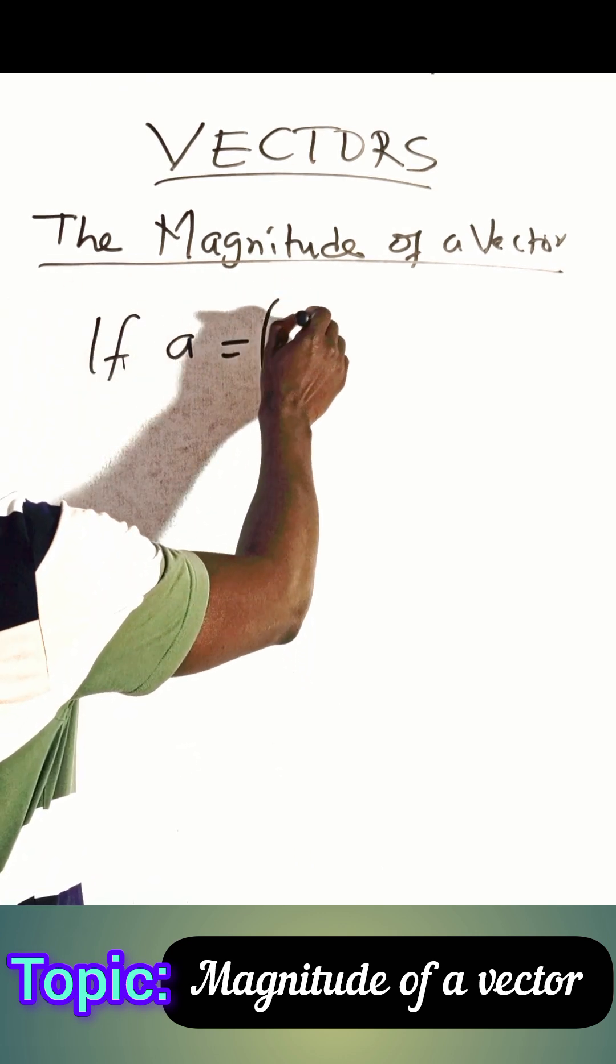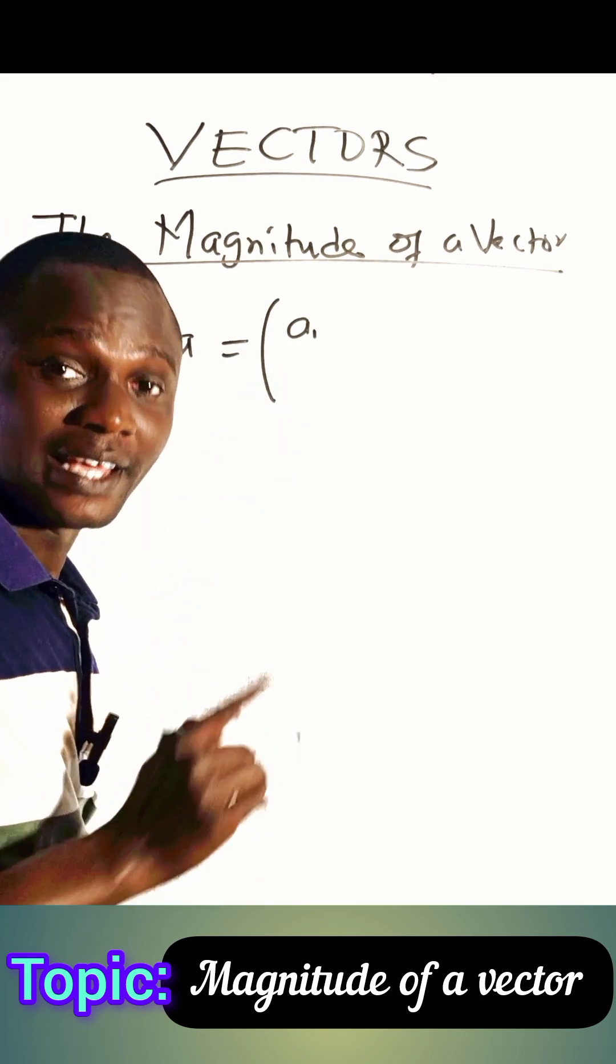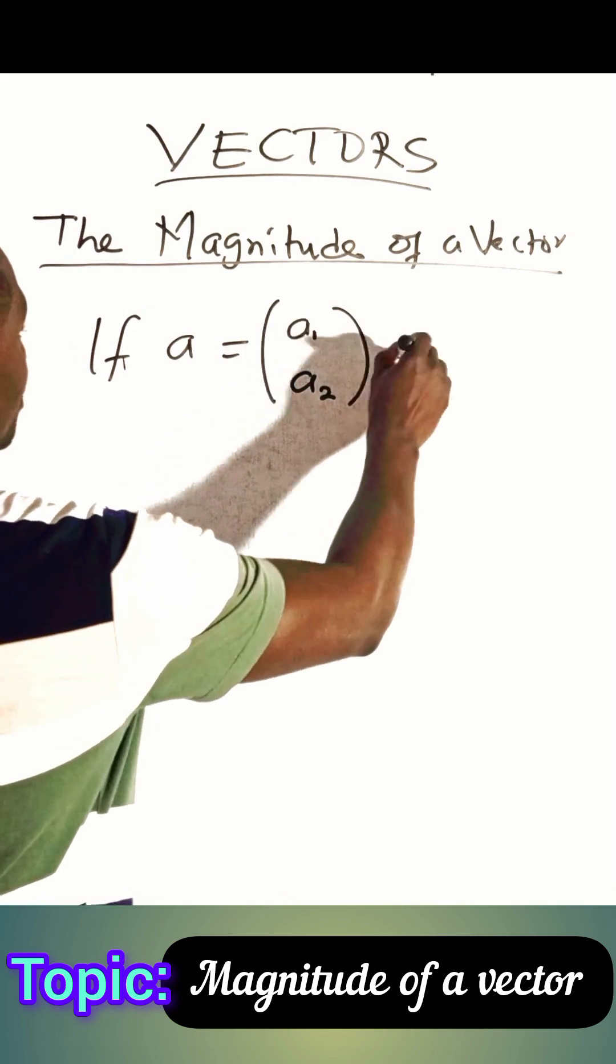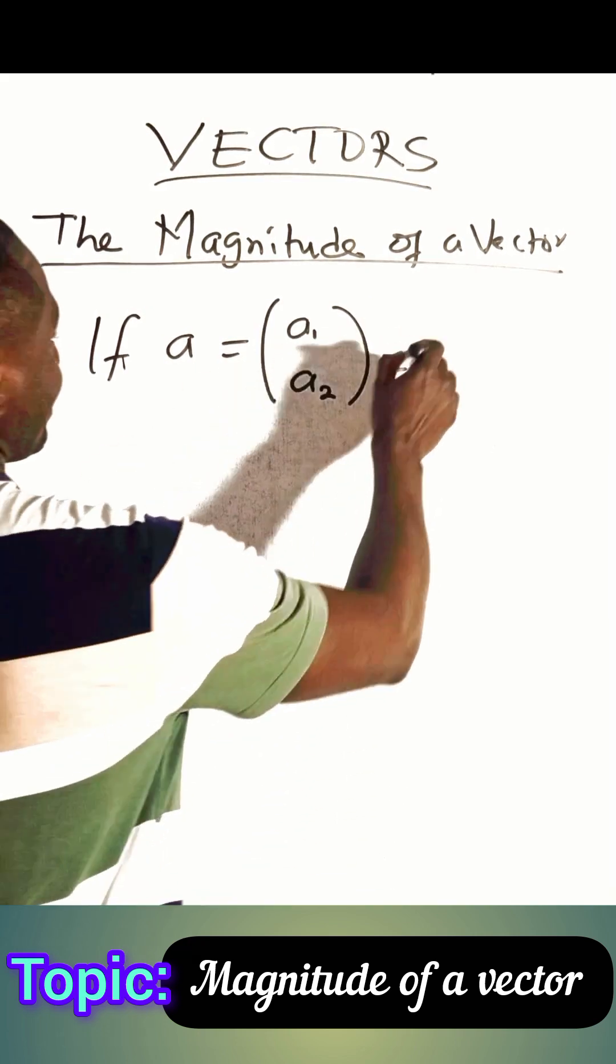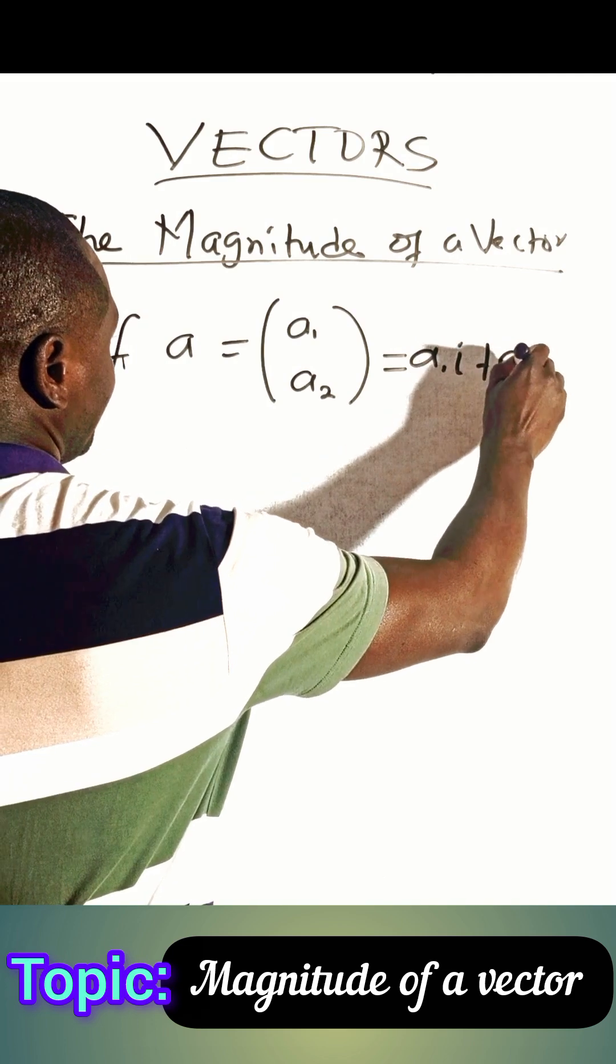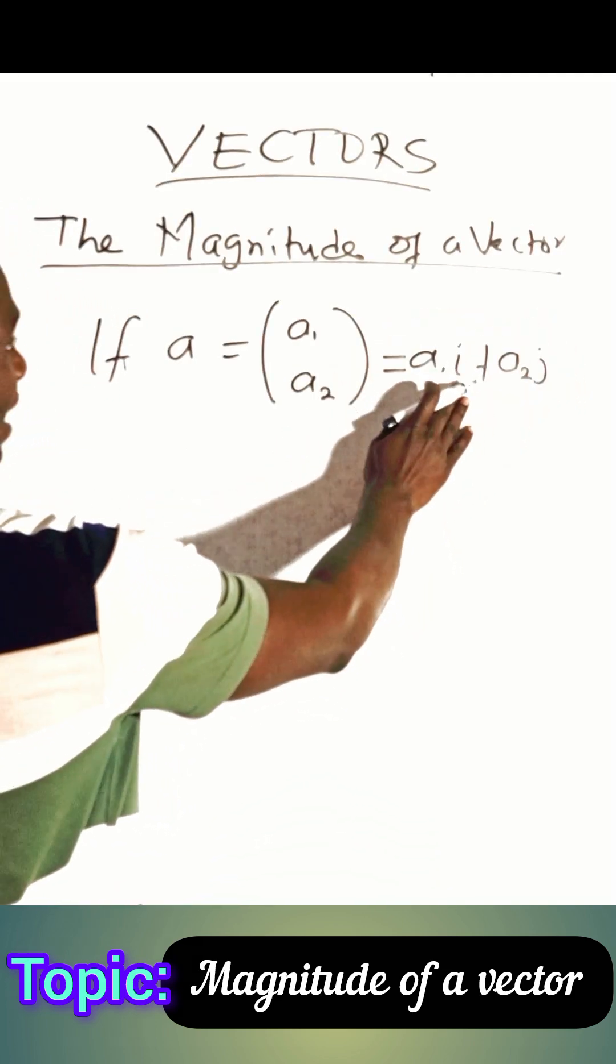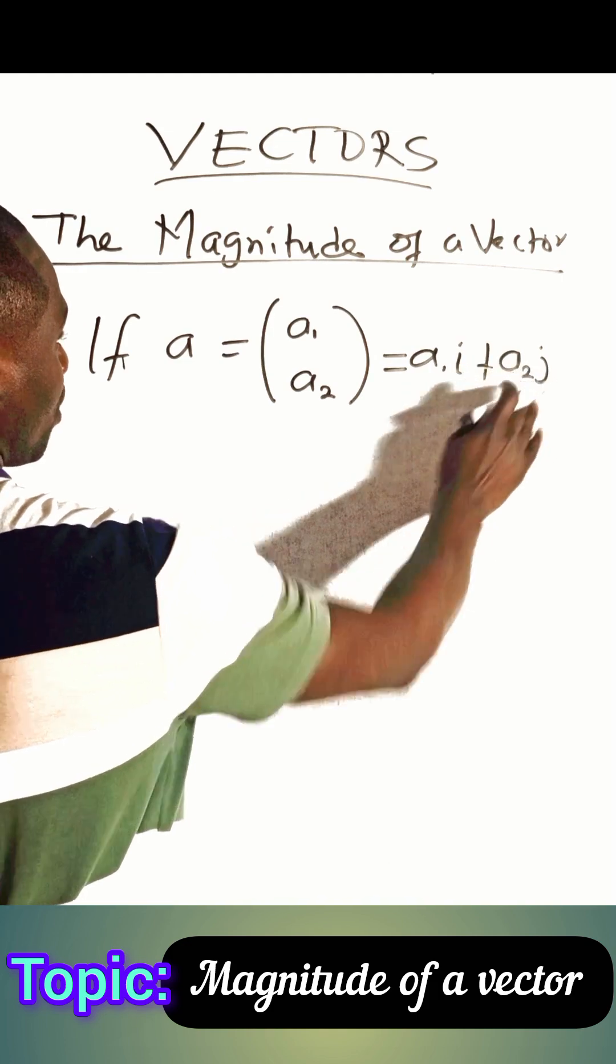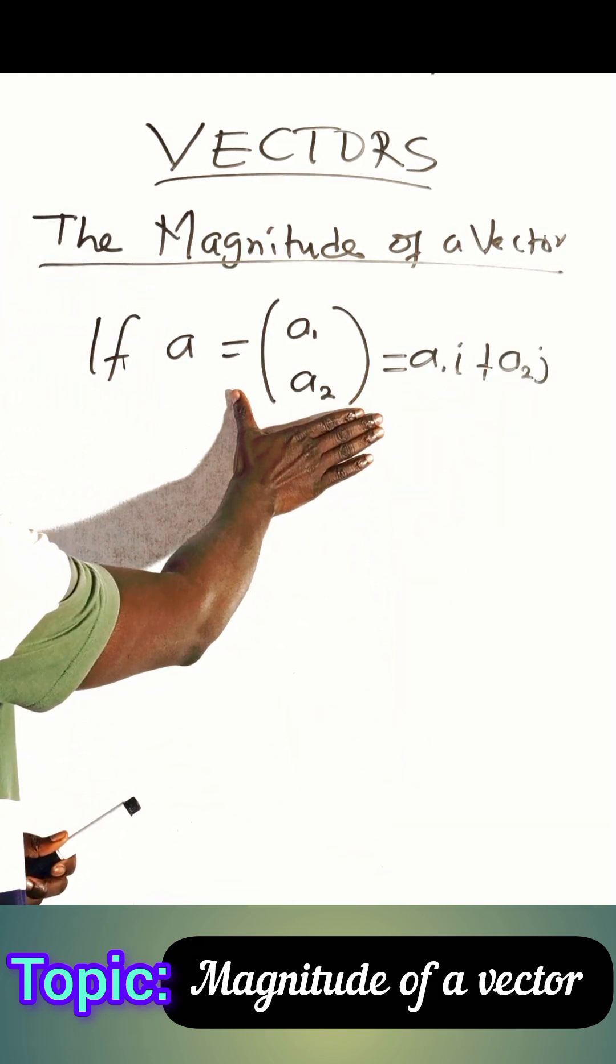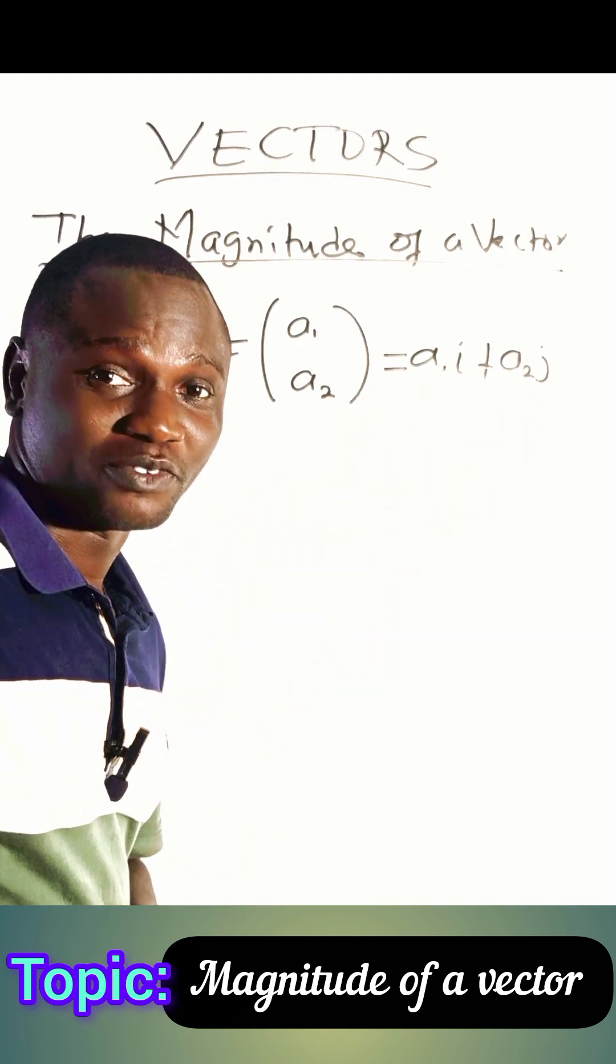Here we have a1 in the x component and a2 in the y component. This can also be written as a1 i plus a2 j. This is the component form of this vector, this is the unit vector form of it. They are the same.